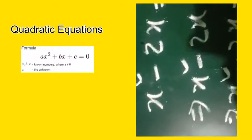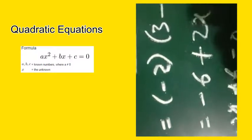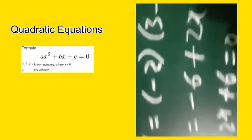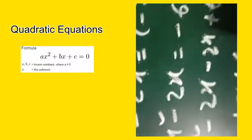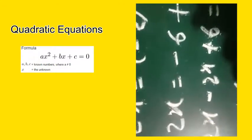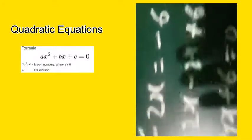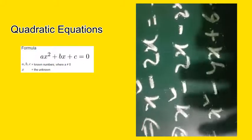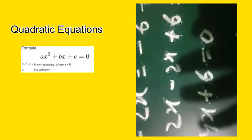First we expand the right side: x squared minus 2x equals minus 2 into 3 is minus 6, and minus 2 into minus x is plus 2x. The next step: x squared minus 2x, then bring minus 2x to the left side, and minus 6 comes to the left side, giving us equal to 0.